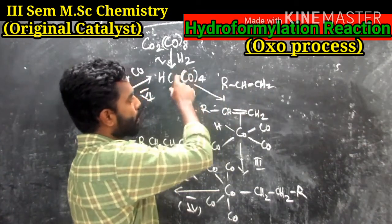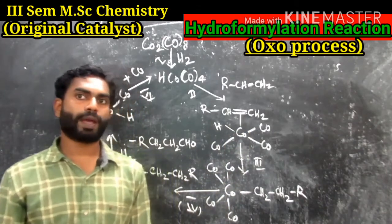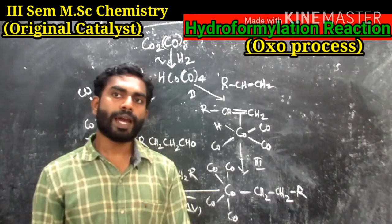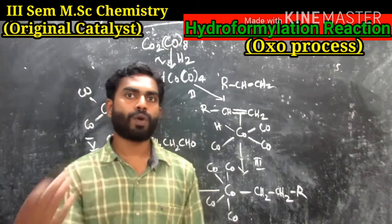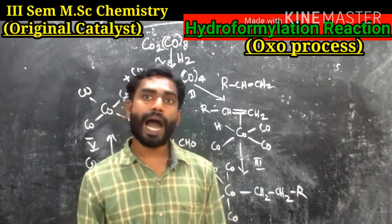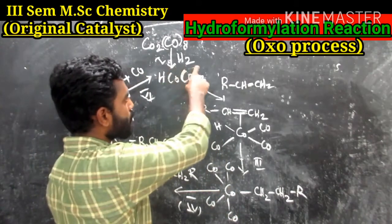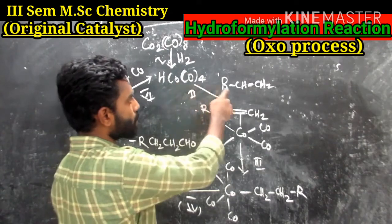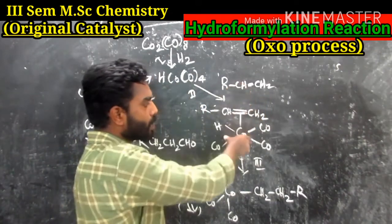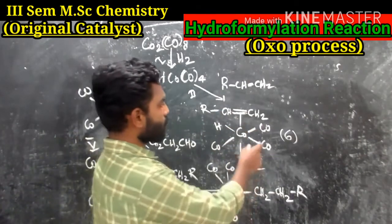Step 2 involves the coordination of the alkene to HCo(CO)₄ to form a coordinatively saturated alkene-type complex. The coordinatively unsaturated alkene complex is the five-coordinated species, with the alkene R-CH=CH₂ coordinating to give a six-coordinated saturated complex.